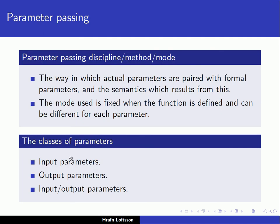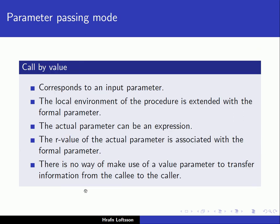There are three classes of parameters: input parameters, output parameters, and input/output parameters. Looking at the first one, call by value, this is the most common parameter passing discipline used in programming languages. This corresponds to an input parameter. The local environment of the procedure is extended with a formal parameter. The actual parameter can be an expression, so we can associate an expression to a formal parameter, which means the expression has to be evaluated. It gives a particular value, and that value is then copied to the formal parameter. The R-value of the actual parameter is associated with the formal parameter.